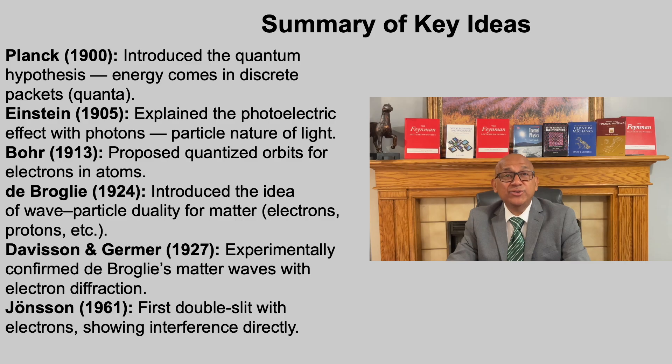Let us bring the key ideas together. In 1900, Max Planck introduced the quantum hypothesis, showing that energy comes in discrete packets called quanta. In 1905, Albert Einstein explained the photoelectric effect, proving that light behaves as particles we now call photons. In 1913, Niels Bohr proposed quantized orbits for electrons, explaining the line spectra of hydrogen. In 1924, Louis de Broglie extended the concept of duality to matter itself, suggesting that electrons and photons have wave-like properties.